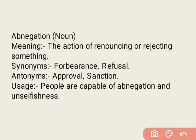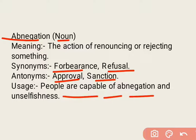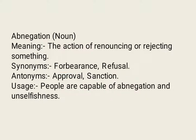Next word is 'abnegation'. Abnegation is a noun. Iska matlab hota hai the action of renouncing or rejecting something — jab hum koi aisi activities karte hain ya koi bhi aisa act karte hain jisme hum kisi cheez ko renounce karte hain, usse chhodte hain, reject karte hain, refuse karte hain. Synonyms: forbearance, refusal. Antonyms: approval, sanction. Example: People are capable of abnegation and unselfishness.